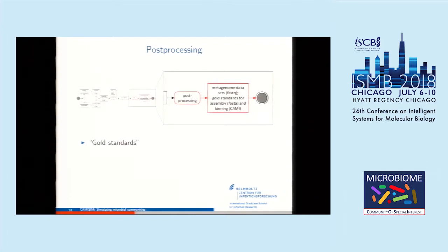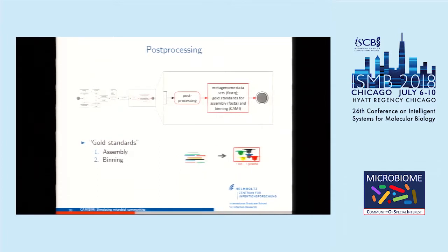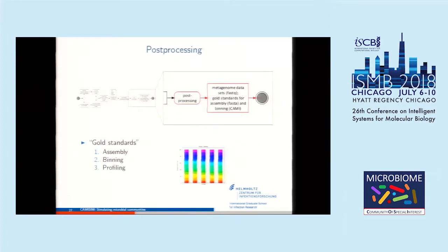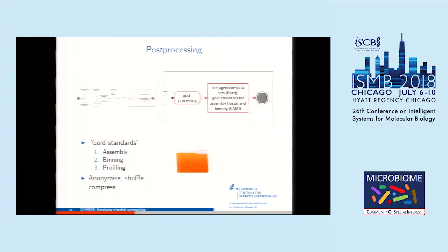Finally, there is the post-processing step where the gold standards needed for evaluation are created. This includes an assembly gold standard — the theoretical maximum assembly you can expect from that dataset, since some genomes might be covered less than 1x — as well as binning gold standards, where all gold standard contigs are assigned because we know which genome they come from, and also a profiling gold standard. If used in a challenge context, sequences are anonymized and shuffled so you cannot identify their origin from the FASTQ files. Since simulating 5 gigabases per sample across 60 samples produces hundreds of gigabytes, the data is compressed.